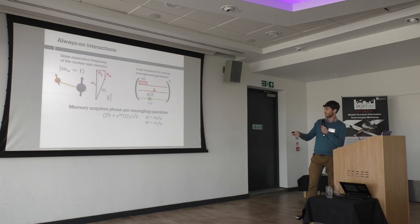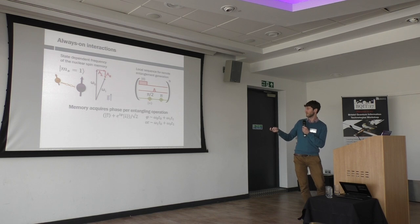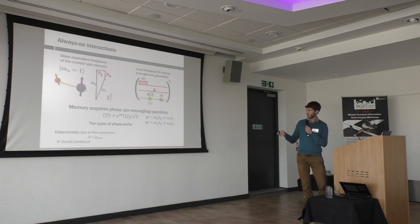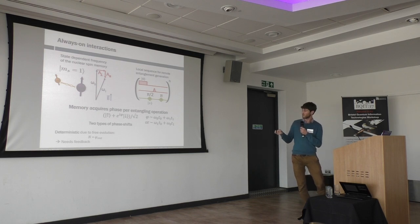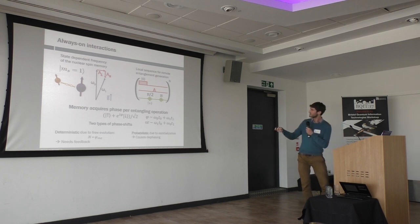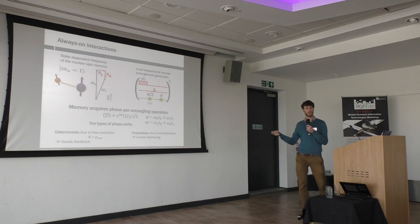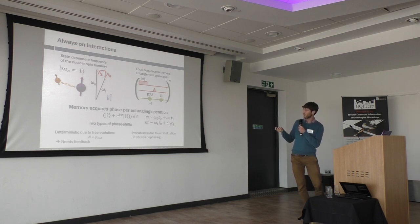We can partially solve this by applying a pi pulse: we don't know if the NV was in zero or one, but we flip it, and with careful timing we can average it out so the nuclear spin spends the same time experiencing each field. But two problems remain. First, the nuclear spin is still picking up a phase, and because we don't know exactly which entanglement generation attempt will succeed, we have to correct for this deterministic phase evolution on the fly. Second, more subtly, we have to reinitialize our spin by re-pumping before each entanglement generation attempt, and this is a stochastic process — so we don't know exactly how long the NV spends in the zero state, meaning the nuclear spin picks up a small uncompensatable phase.